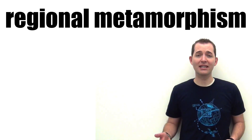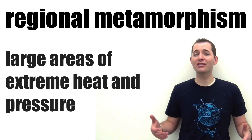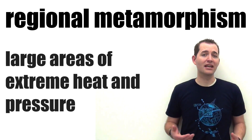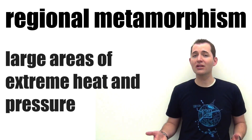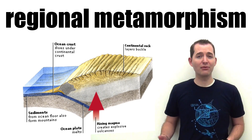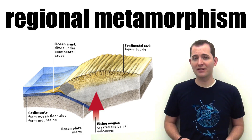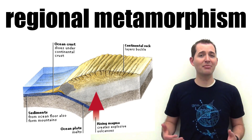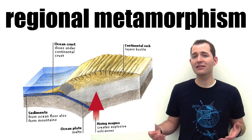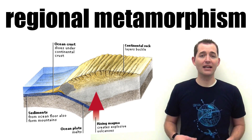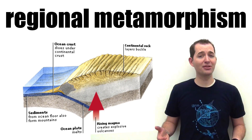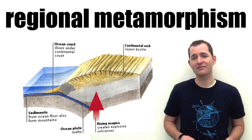Regional metamorphism takes place over large areas, whereas contact metamorphism is usually a localized or smaller area. An example of where regional metamorphism might take place could be at the base of a mountain where two tectonic plates are colliding. In these situations there are extreme temperatures and extreme pressures.